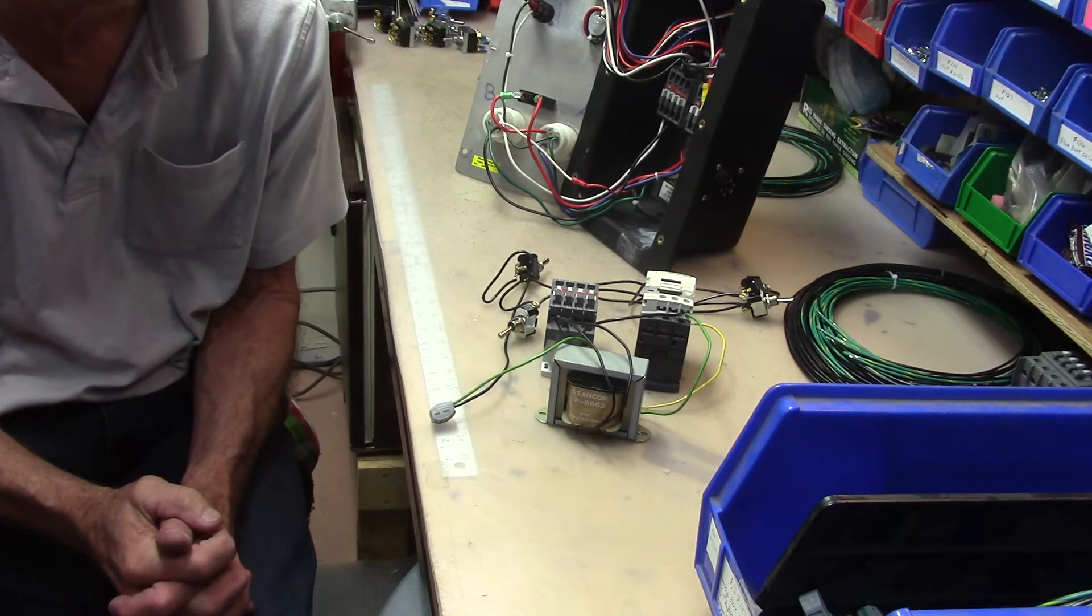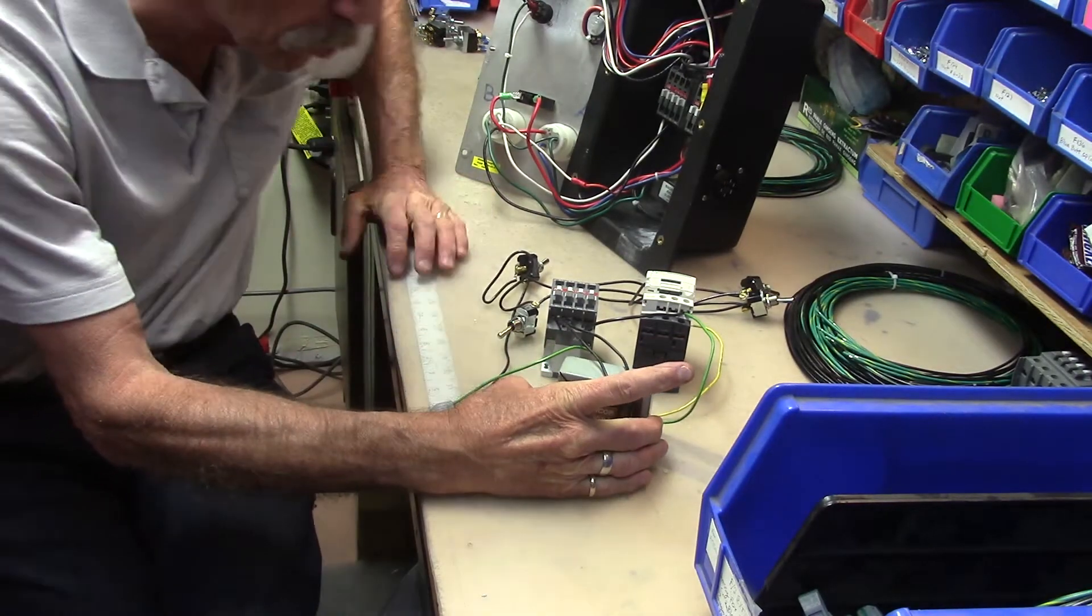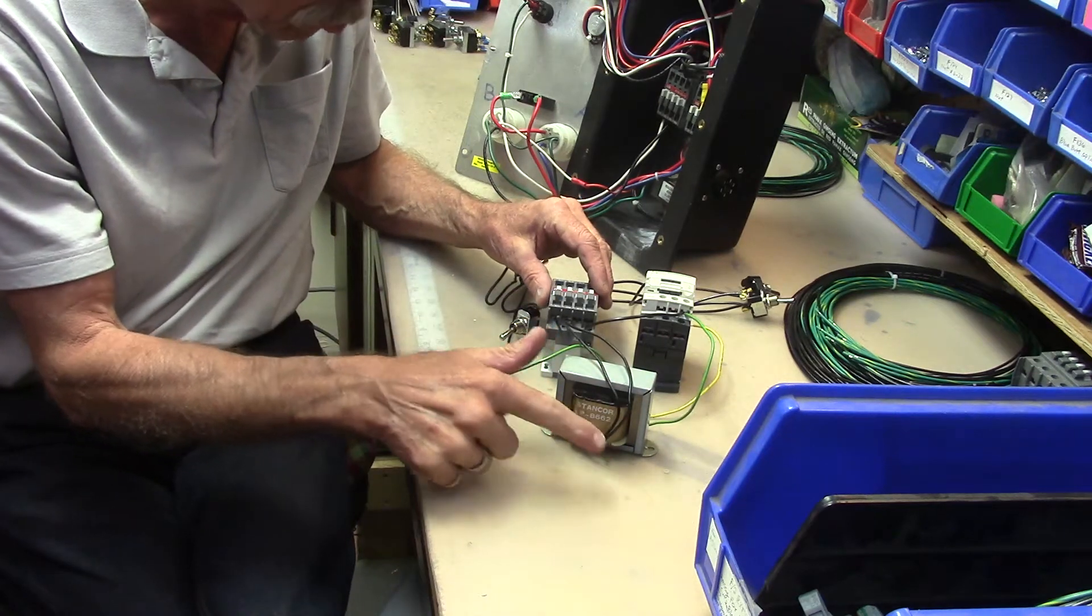Today I want to talk a little bit about how the remote on your Force 2 works. It starts with a transformer that converts 110 volts or 120, whatever's coming out of the wall.